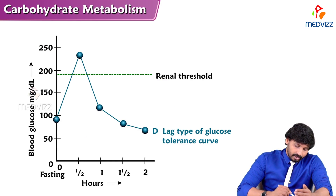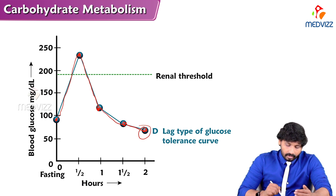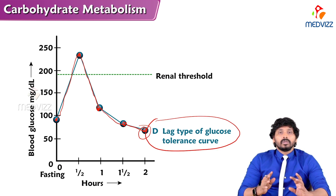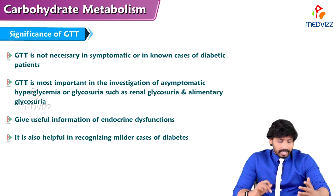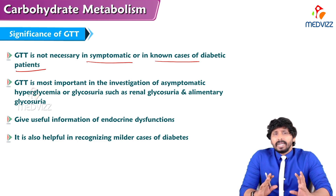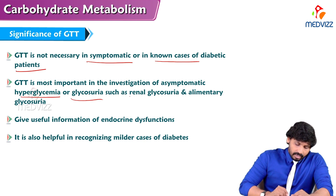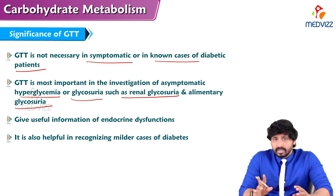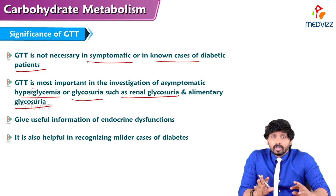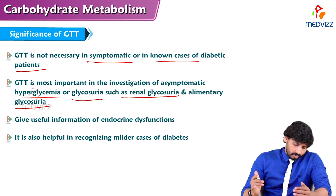There is also a lag-type curve pattern starting at around 100 mg/dL, rising to 200, then coming back down and finally falling below the normal level. This pattern indicates a significant defect in glucose metabolism.